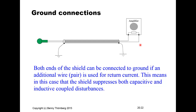Alternatively, if an additional return wire is used — making a pair of wires — both ends of the shield can be grounded, suppressing both capacitive and inductive coupled disturbances. A differential amplifier input is used, with one wire for the signal and one for the return current. Suppression is even better if these wires are twisted.